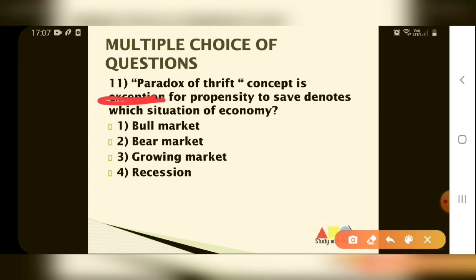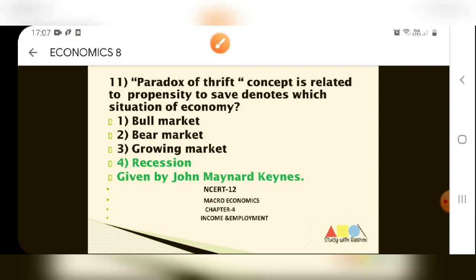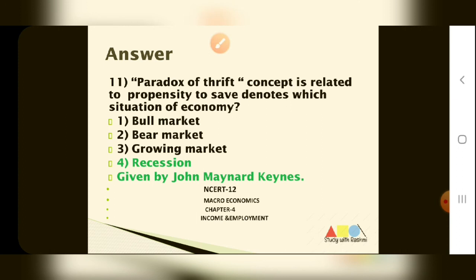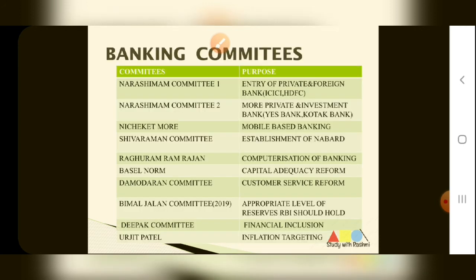Question number 11: the paradox of thrift concept is related to propensity to save — it denotes which situation of the economy? Options: 1. Bull Market, 2. Bear Market, 3. Growing Market, 4. Recession. The answer is 4 — Recession. The paradox of thrift was given by John Maynard Keynes, found in Macroeconomics Chapter 4 — Income and Employment.